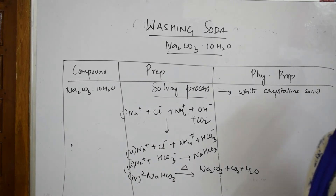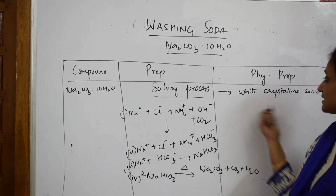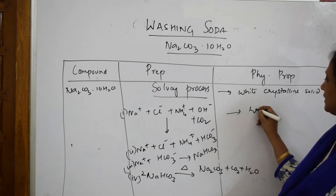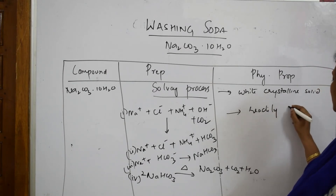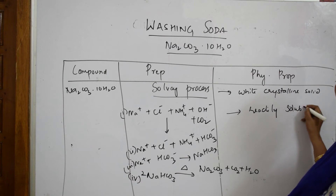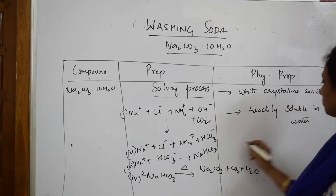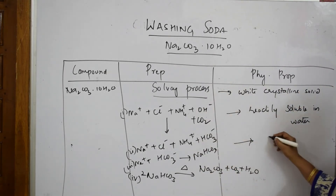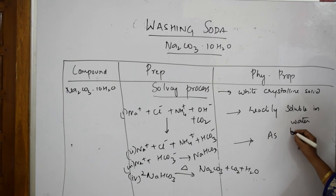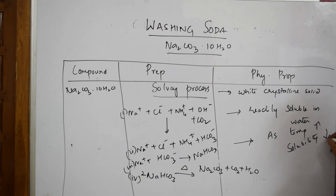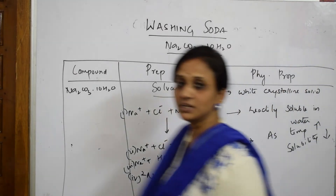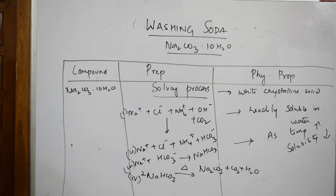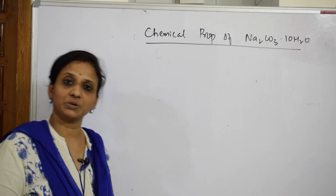Now for the physical properties of sodium carbonate decahydrate: it is a white crystalline solid and is readily soluble in water. An important point to remember is that as temperature increases, solubility decreases — we will see the reason for this as well.